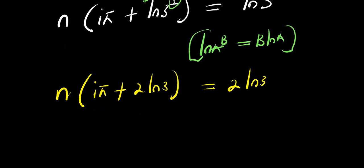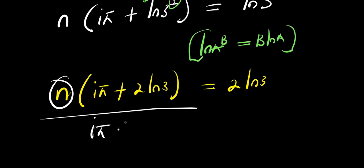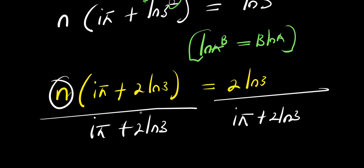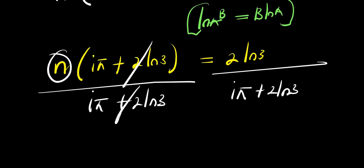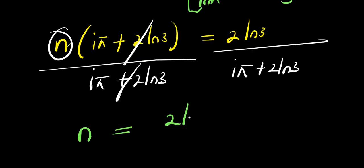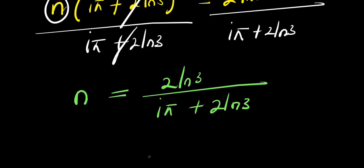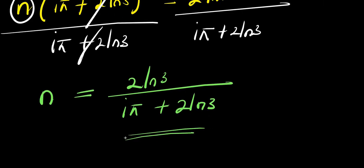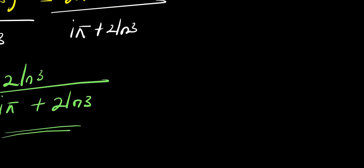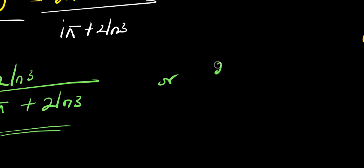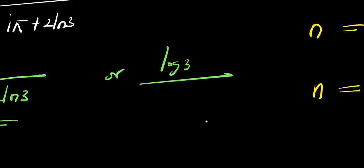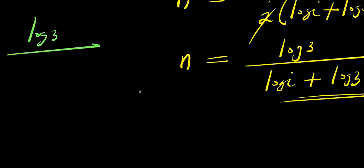So from here we are solving for n. We divide both sides by i·π plus 2 times natural log of 3. This cancels, so what we are going to have is n equals 2 times natural log of 3, divided by i·π plus 2 times natural log of 3. So this becomes our answer based on this second method. Let me confirm the first answer was: n equals log 3 divided by log i plus log 3.